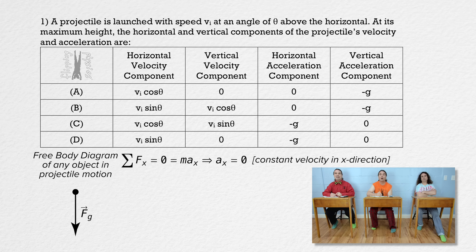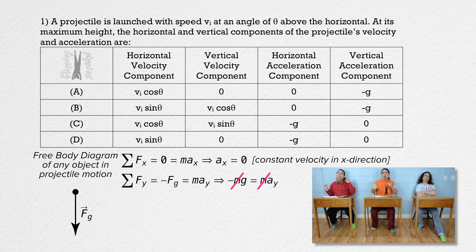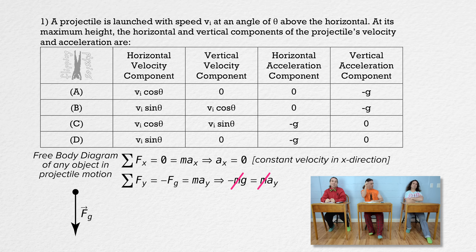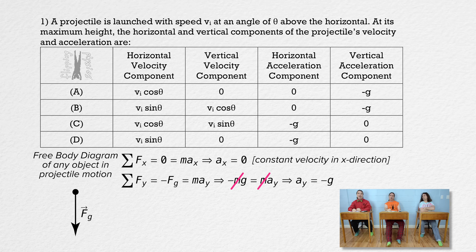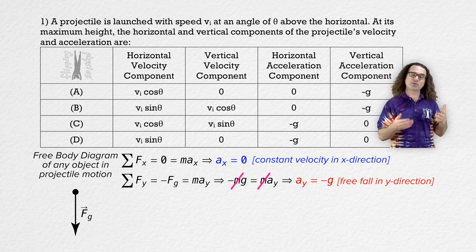That is why projectiles always have a constant velocity in the x direction. The net force in the y direction equals negative force of gravity, and net force in y equals mass times acceleration in the y direction. Force of gravity equals mass times acceleration due to gravity, and everybody brought mass to the party. Therefore, the acceleration in the y direction of any object in projectile motion at any point in its path equals negative g. That gives a better understanding of why projectile motion works the way it does: constant velocity in the x direction and free fall in the y direction.